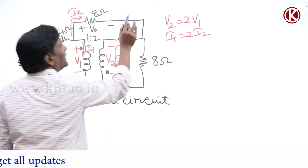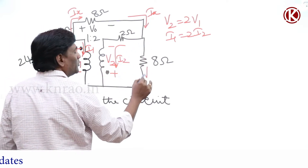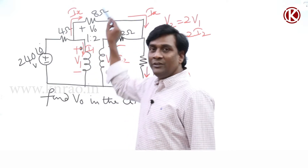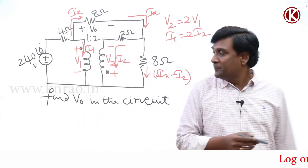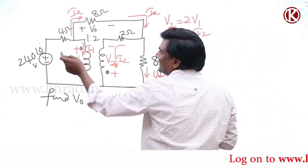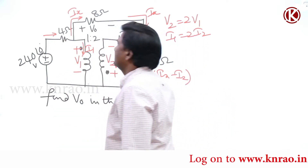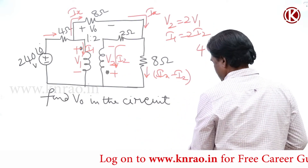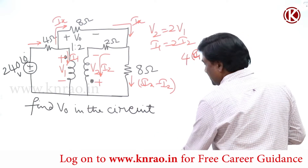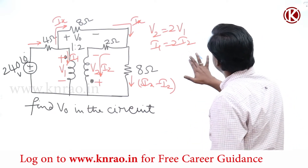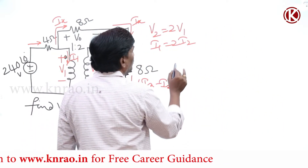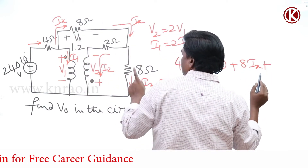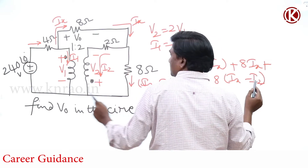If I think of current leaving here as some Ix, the same current Ix should come here, and Ix minus I2 will flow in the branch. Now let us apply KVL around this loop. If I apply KVL, minus 240 — or sending it to the other side, plus 240 — and current entering here is I1 plus Ix. So the equation becomes: 4(I1 + Ix) plus 8(Ix minus I2) equal to 240.